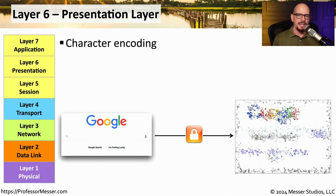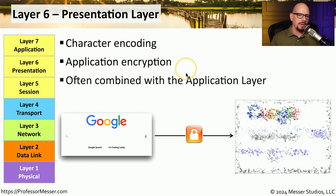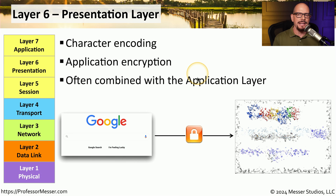OSI layer 6 is responsible for putting data into a format we will eventually see with our human eyes. This refers to character encoding and application encryption and decryption. It's often combined and discussed in conjunction with the application layer at layer 7. The presentation layer is the layer in operation just prior to data appearing on our screen.